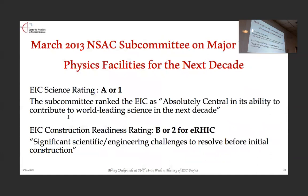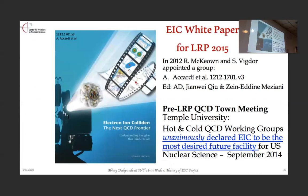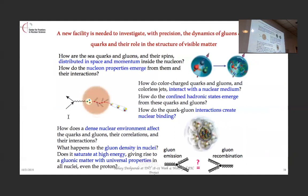The NSAC subcommittee evaluation of major nuclear physics facilities gave the EIC a very high rating for science — absolutely central, contributing to world-leading science in the next decade. The machine needed some work, on both the EIC and JLAB sides. That evolved into a white paper asked for by Bob Tribble and Steve Vigdor, resulting in the white paper with Jian-Wei Qiu and Zan Meziani as co-coordinators with me. In the long-range plan, the hot and cold QCD working group unanimously declared EIC to be the most desired future facility for US nuclear science. That was in September 2014.